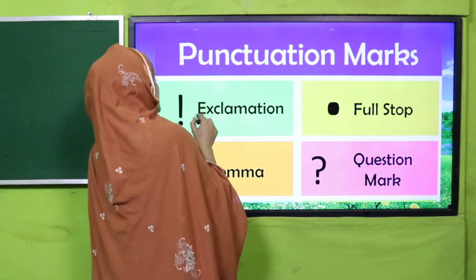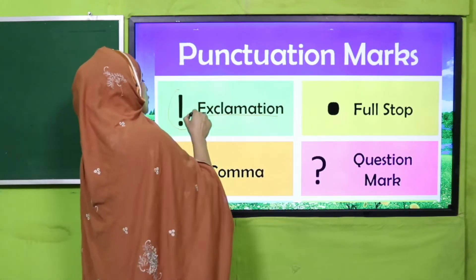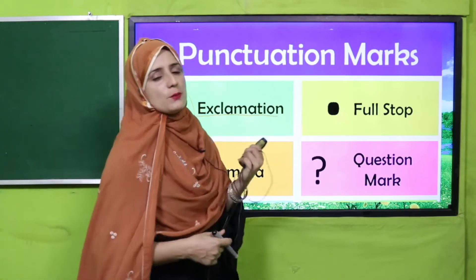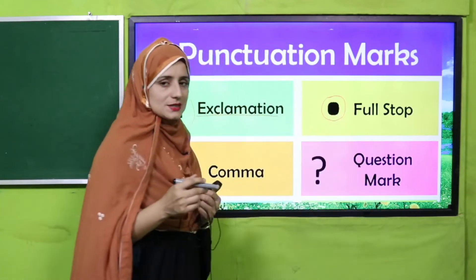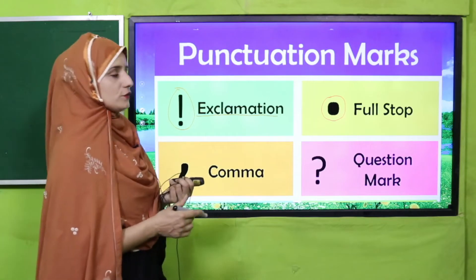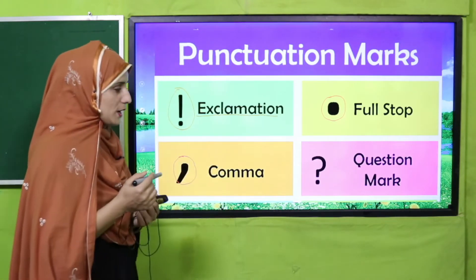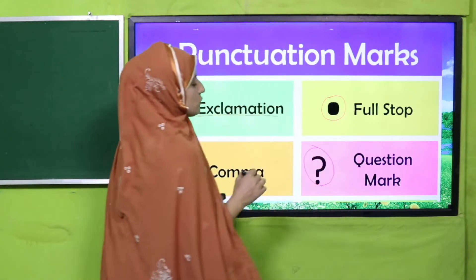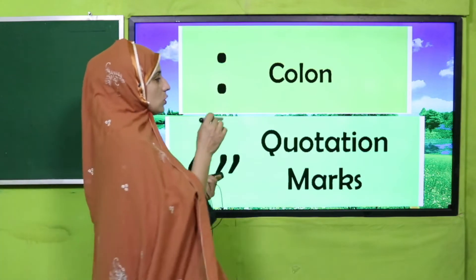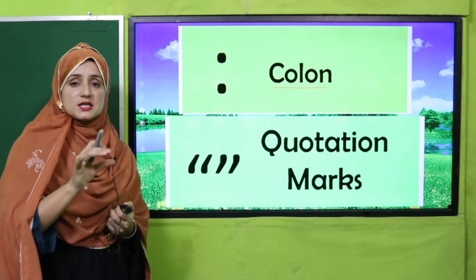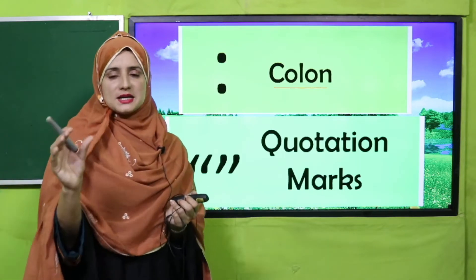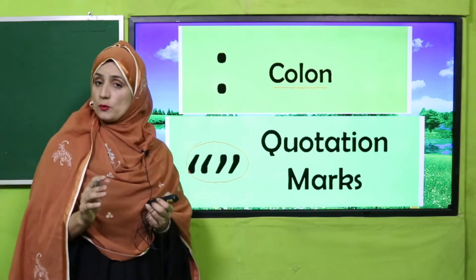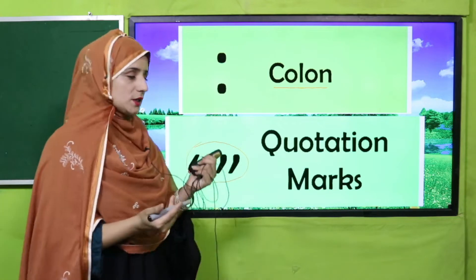Which marks are there? Exclamation marks — we use these when we show certain feelings or expressions, like 'Wow, so beautiful!' Full stop — we use at the end of a declarative sentence. Comma — we use when we have a series of items. Question mark — we use when we ask a question. Colon — we use when we are going to mention a series of things. Quotation marks — we use when we quote the exact words of the speaker.